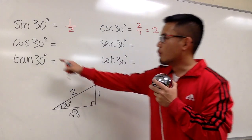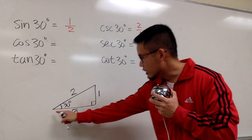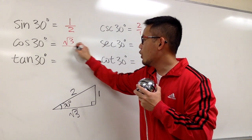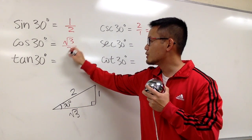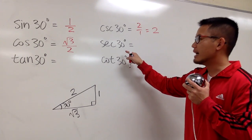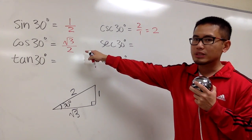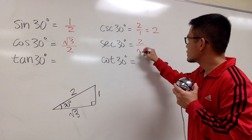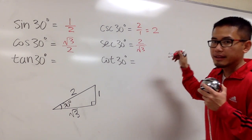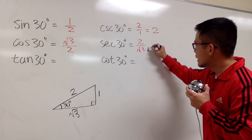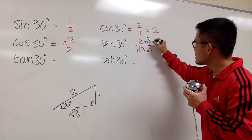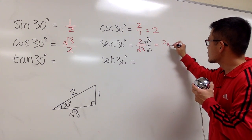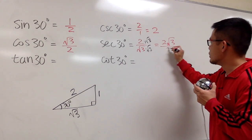For cosine of 30 degrees, it's the adjacent, which is square root of 3, over the hypotenuse, which is 2. And for secant of 30 degrees, we do the reciprocal of that, so it will be 2 over square root of 3. At this stage, let's go ahead and multiply by square root of 3 on the bottom and also on the top, so you end up with 2 square root of 3 over 3.